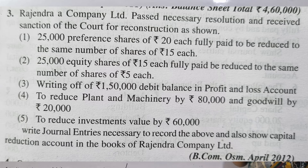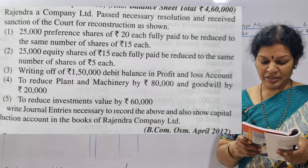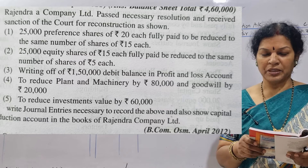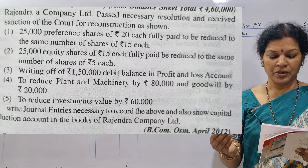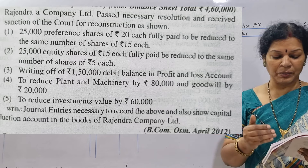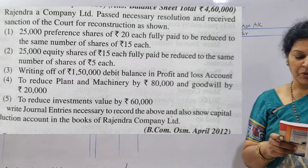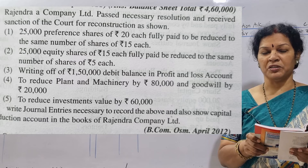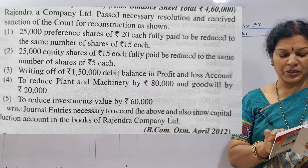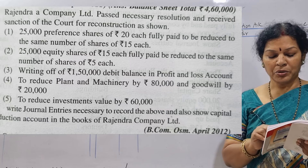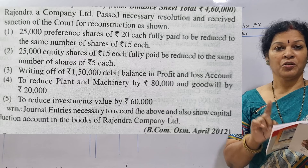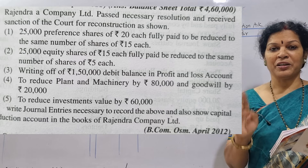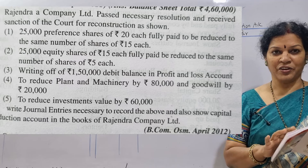Let me read this problem first. Rajendra and Company Limited passes a necessary resolution and received sanction of the court for reconstruction. Point number one: 25,000 preference shares of ₹20 each, fully paid, to be reduced to the same number of shares at ₹15 each. So we will have one entry: preference shares account debit, to preference shares account, to capital reduction account. This is the first entry.